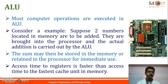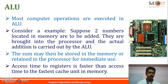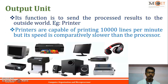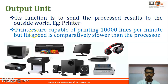This diagram shows a motherboard. In the motherboard, the processor, RAM unit, and control processing units are present, along with supporting co-processors. This entire motherboard contains the ALU and control unit. The output unit's function is to send the processed results to the outside world — examples include printers and speakers.